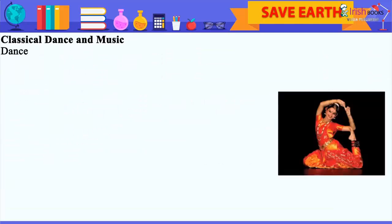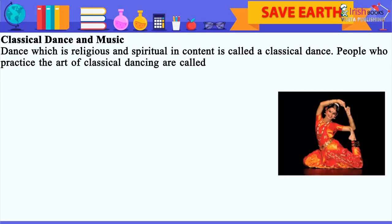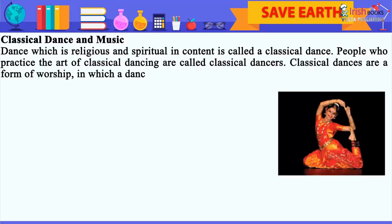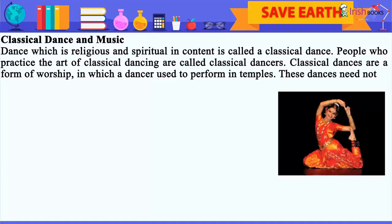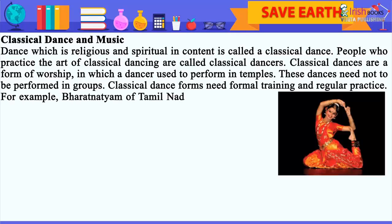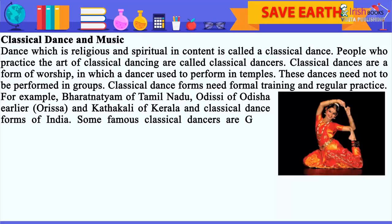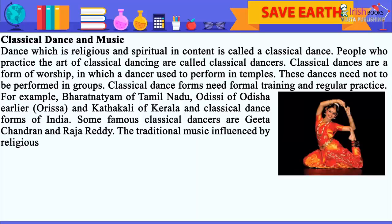Dance which is religious and spiritual in content is called classical dance. People who practice the art of classical dancing are called classical dancers. Classical dances are a form of worship in which a dancer used to perform in temples. These dances need not be performed in groups. Classical dance forms need formal training and regular practice. For example, Bharatnatyam of Tamil Nadu, Odissi of Odisha, and Kathakali of Kerala are classical dance forms of India. Some famous classical dancers are Gita Chandran and Raja Reddy.